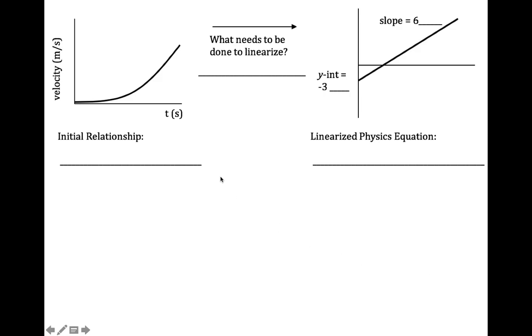The idea here is we aren't going to do the steps in linearization, the actual squaring or square rooting or inversing, but we want to show you the ideas, what you would do and then how you would write the physics equation. So the initial relationship is quadratic. So what needs to be done to linearize a quadratic curve? You're going to square the horizontal variable. In this case it's time.